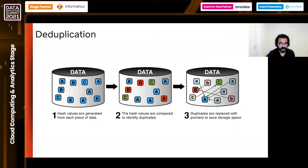A good way to look at it: you have some data in your data store, you generate hash values for each piece of data, and the hash values are compared to identify duplicates. There are multiple copies of one particular data item. Finally, you replace the duplicates with pointers to save storage space.